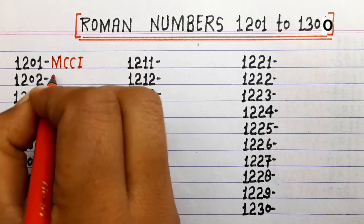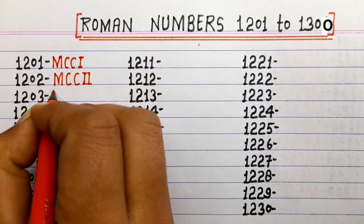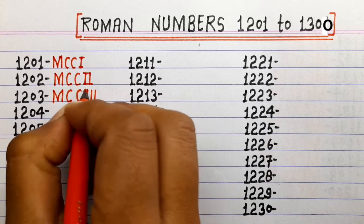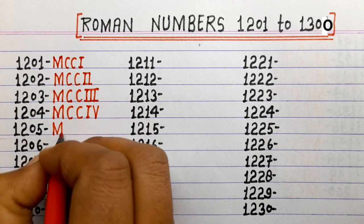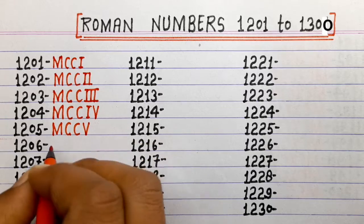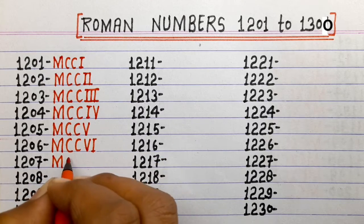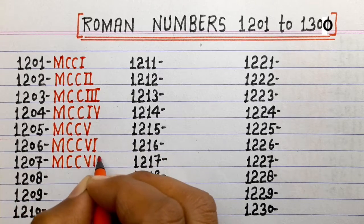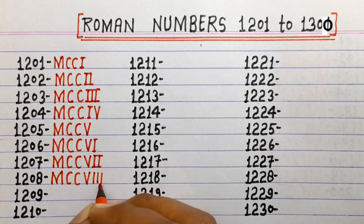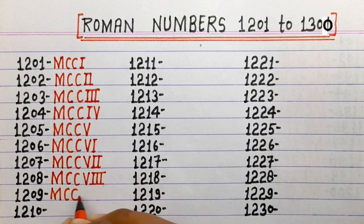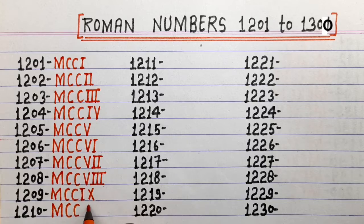1201 MCCI, 1202 MCCII, 1203 MCCIII, 1204 MCCIV, 1205 MCCV, 1206 MCCVI, 1207 MCCVII, 1208 MCCVIII, 1209 MCCIX, 1210 MCCX.